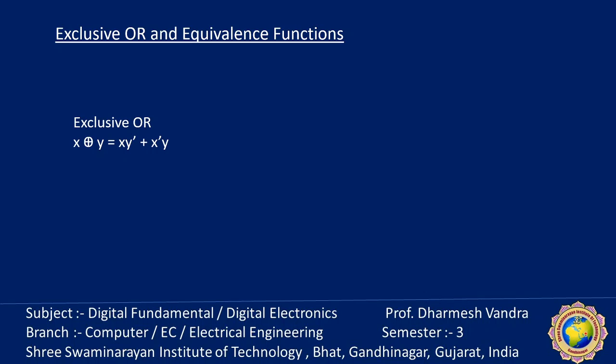The symbol of exclusive OR is a circle with a plus sign, and the Boolean function is x·y' + x'·y. For the equivalence function, the symbolic form uses a circle with one dot, and the exclusive equivalence of x and y equals x·y + x'·y'.